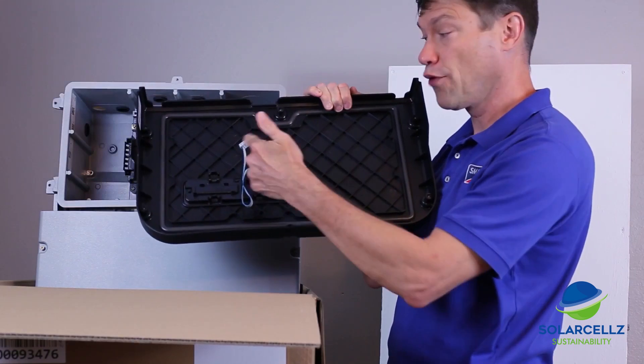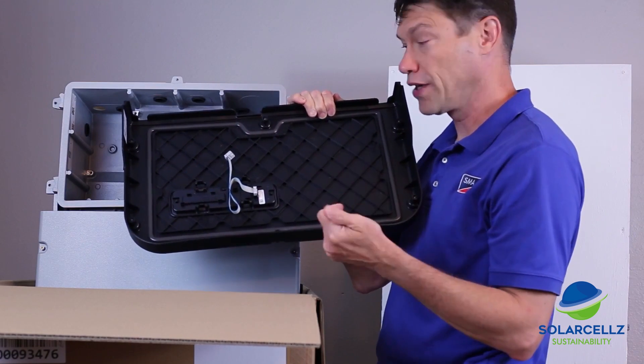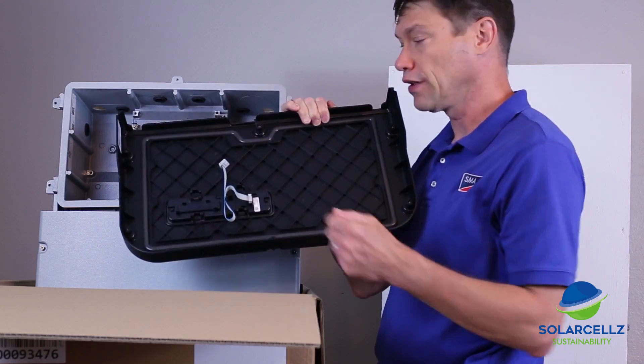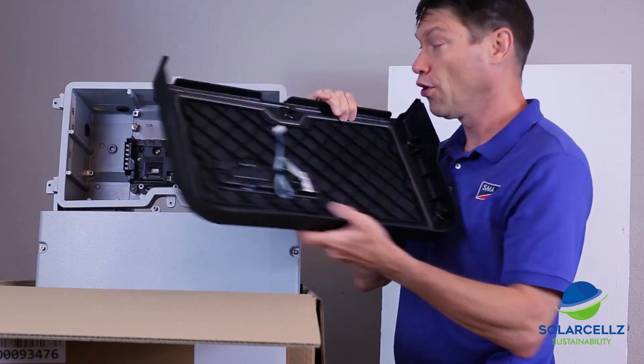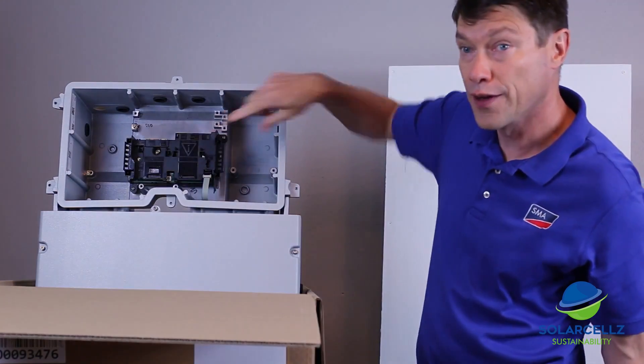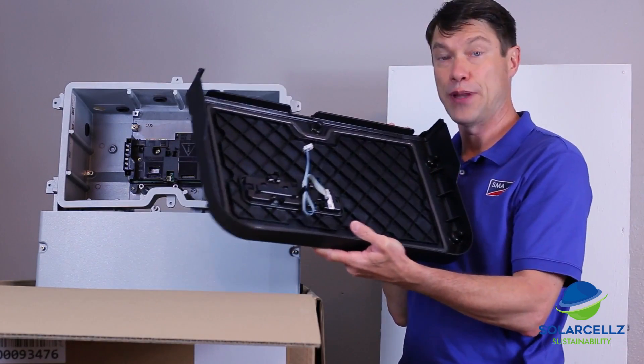Note that the ribbon cable for the display board is not installed upon shipment. When we replace the connection unit lid, we'll have to make sure this end of the ribbon cable plugs into the display port on the communications board. For now, just set this lid aside in a safe place.